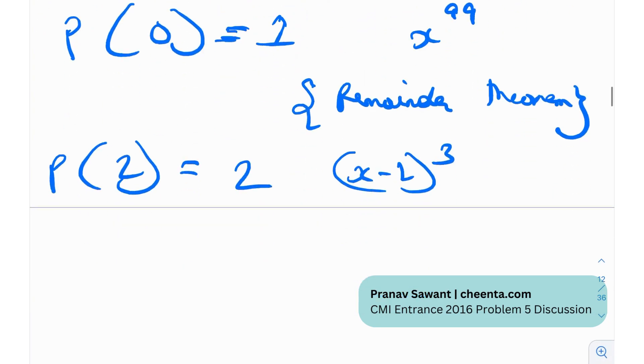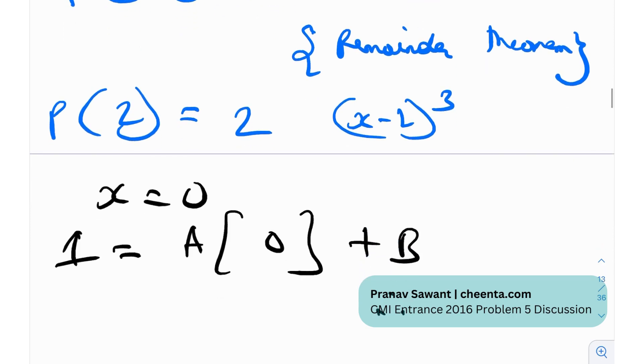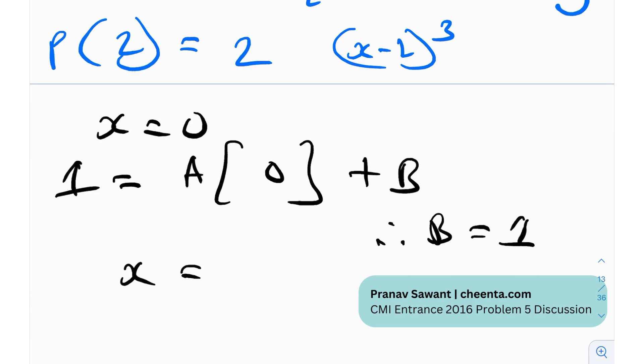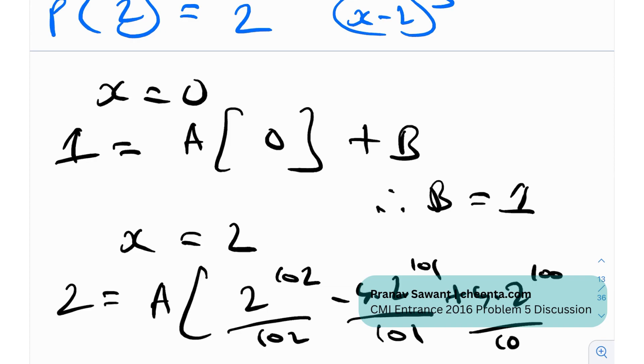Let me just do that for you if I put x equals to 0 I'll get p of 0 which is 1 which is a times everything becomes 0 over here plus b so therefore b is equal to 1 and after that if I put x equals to 2 I get p of 2 which is 2 which is a times 2 raised to 102 divided by 102 minus 4 times 2 raised to 101 divided by 101 plus 4 times 2 to the 100 divided by 100 plus 1.